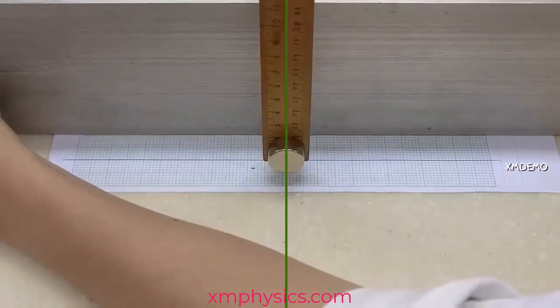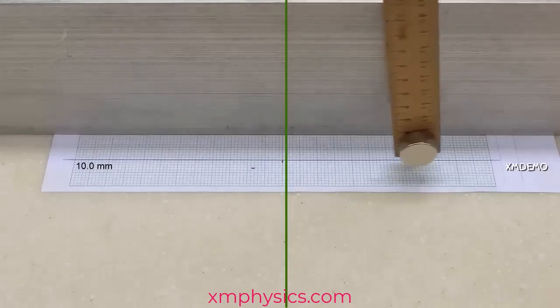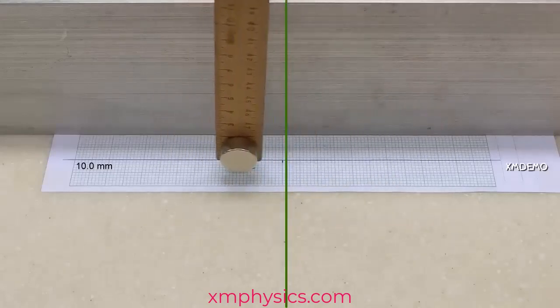By moving the aluminum block closer, we can increase the eddy current and therefore increase the amount of damping.